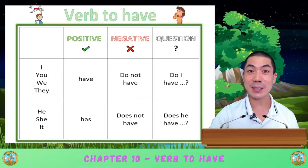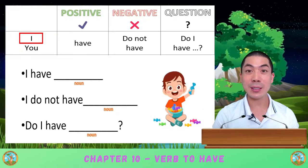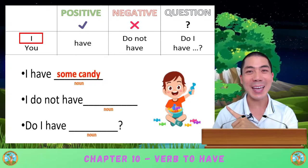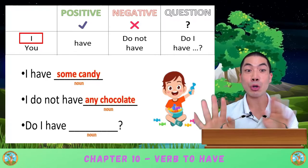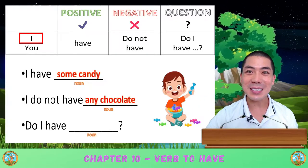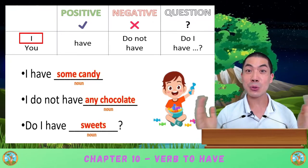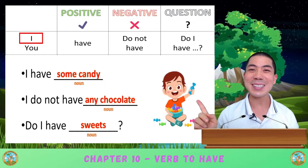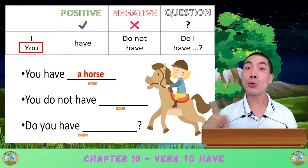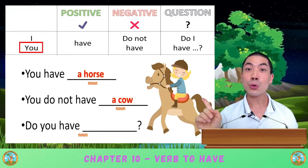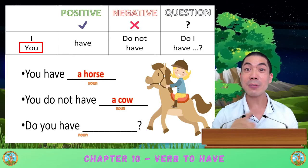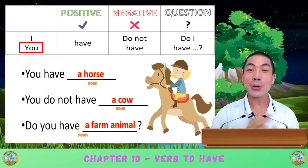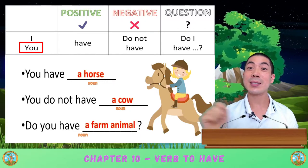Now let's use all of this to make sentences. Let's read through all the sentences together. In this picture, we can say 'I have some candy. I do not have any chocolate.' For the question, 'Do I have sweets?' To answer, we can say 'Yes, I have sweets.' In this picture, we can say 'You have a horse. You do not have a cow. Do you have a farm animal? Yes, you have a horse. That's a farm animal.'